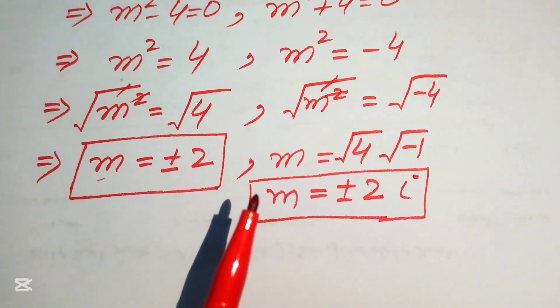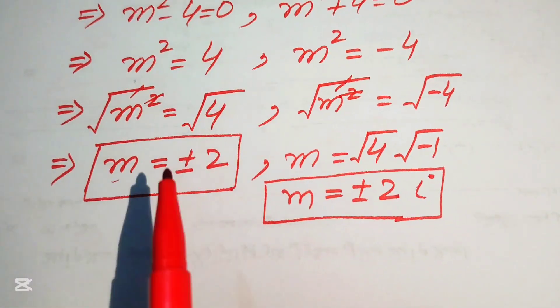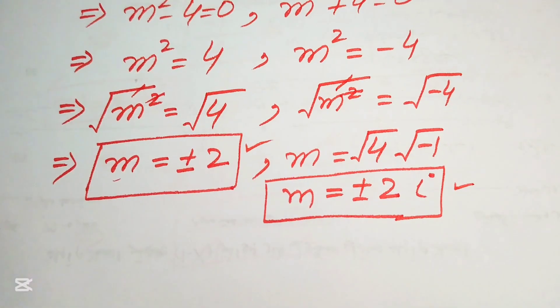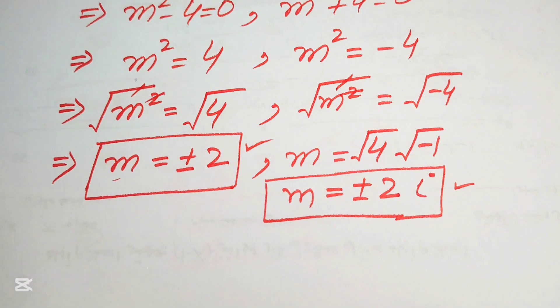These four roots — m = +2, -2, +2i, -2i — are the complete solution of the given equation. Thank you so much for watching this video. Please subscribe to my channel for more exciting videos.